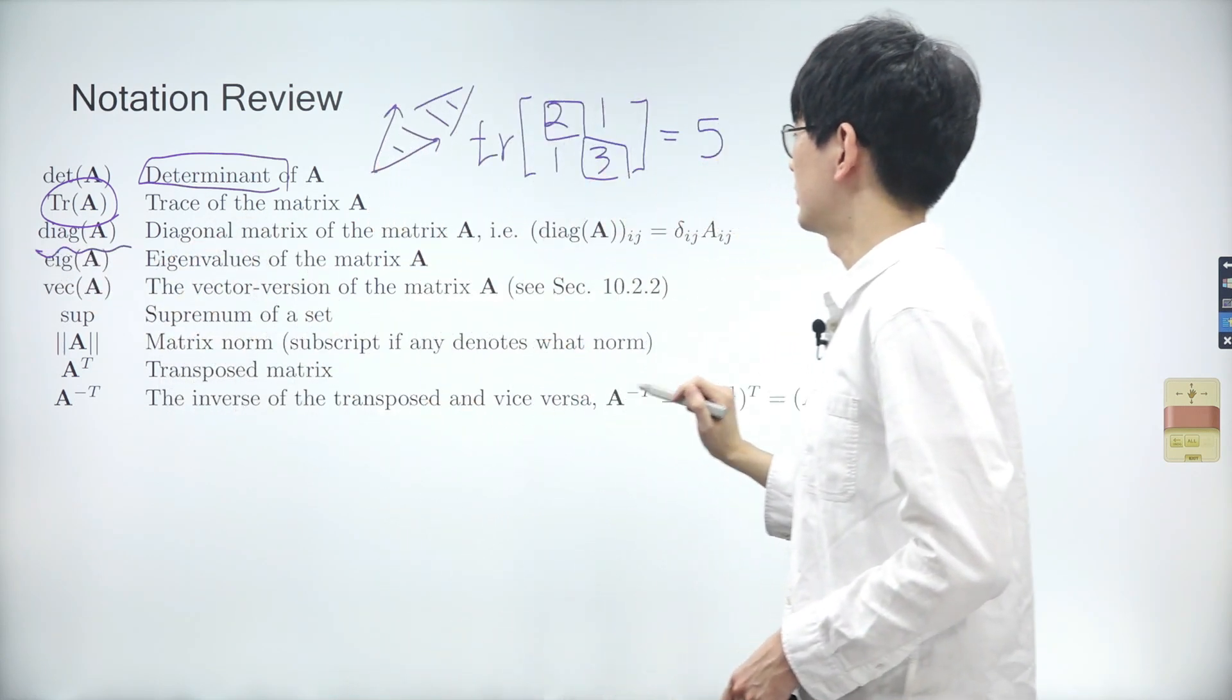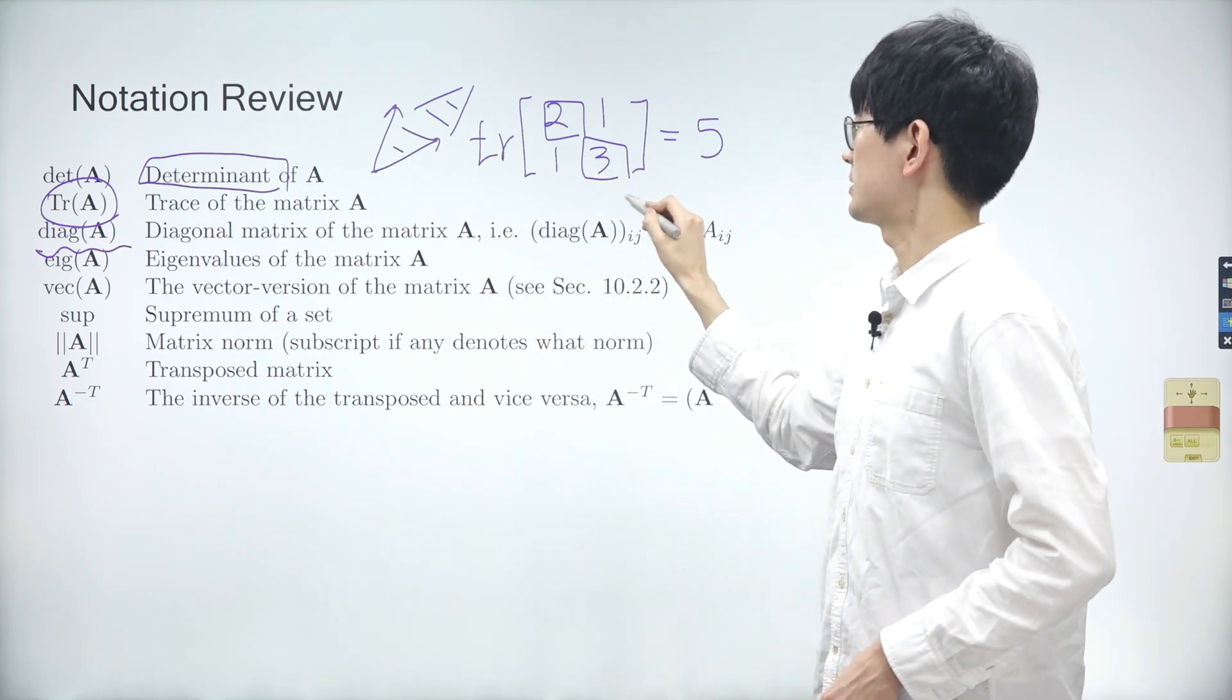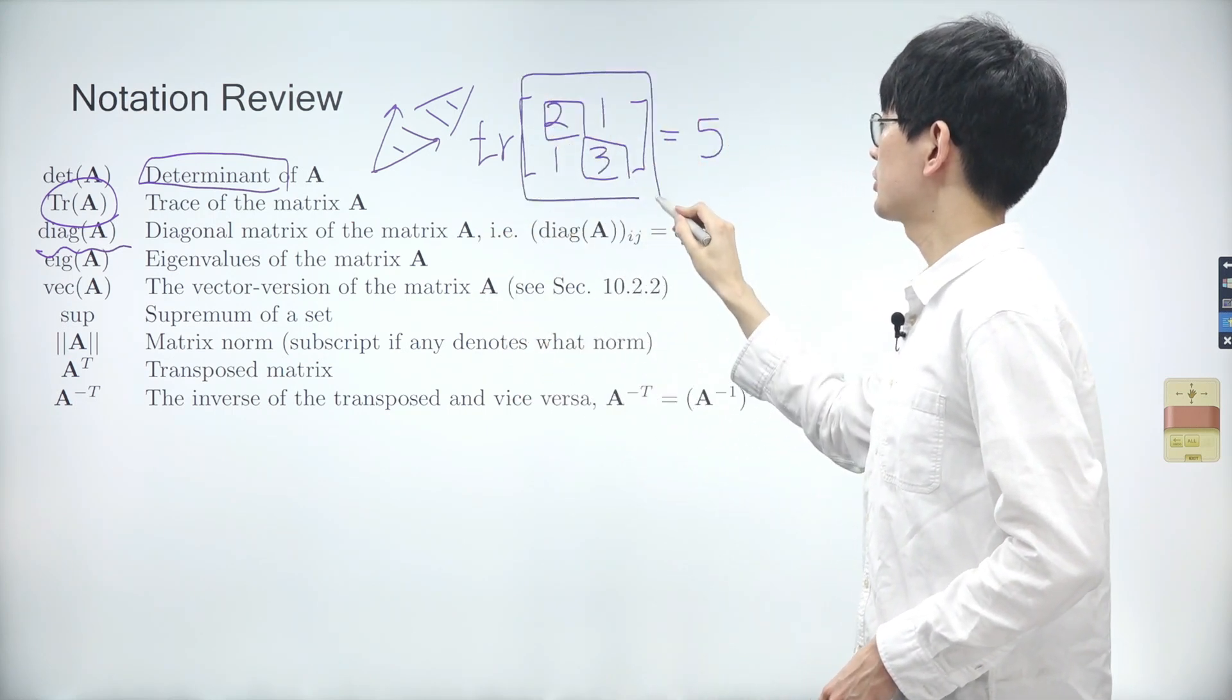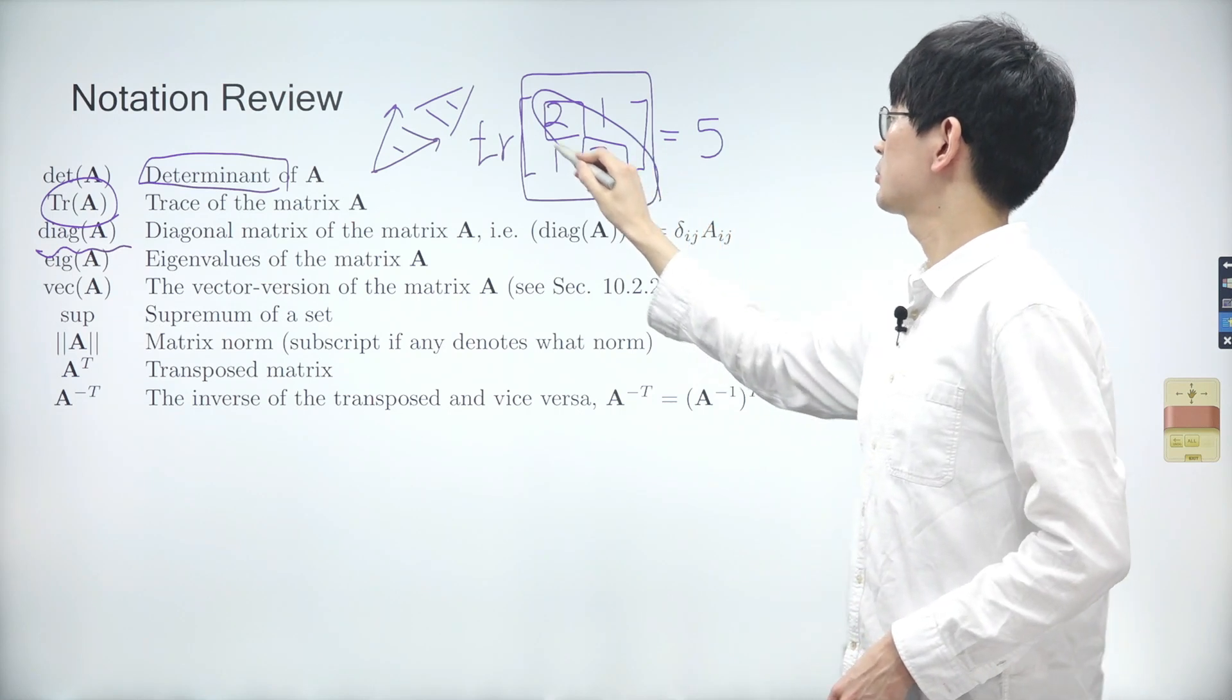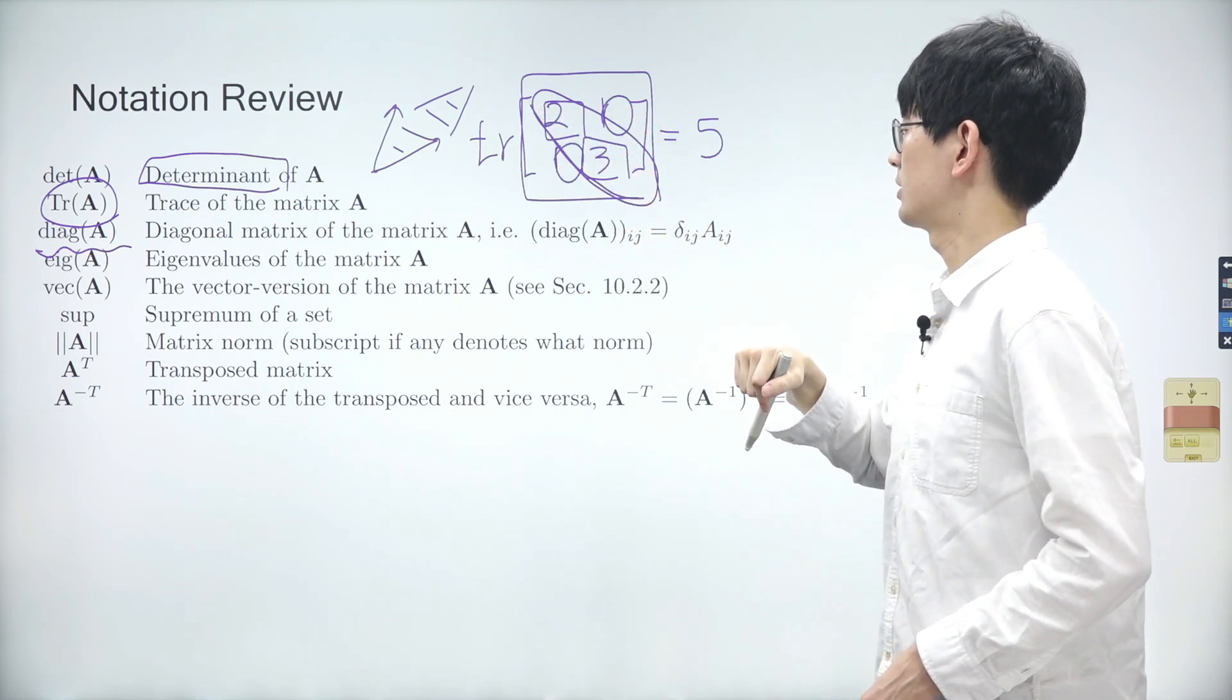A diagonal matrix of matrix A is the matrix that has the same diagonal elements as A and zeros for all other elements. Thus, it only contains the diagonal components of the original matrix.